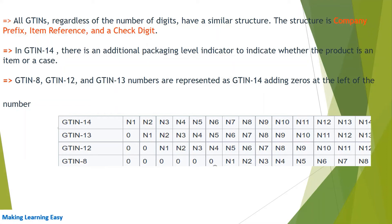GTIN-8, GTIN-12, and GTIN-13 can all be represented as GTIN-14 by adding zeros at the left of the number. For example, if you have a GTIN-8, which is an 8-digit number, you can represent it as GTIN-14 by putting six zeros at the start. Similarly, for GTIN-12 like UPC, you can represent it as GTIN-14 by putting two zeros at the start.